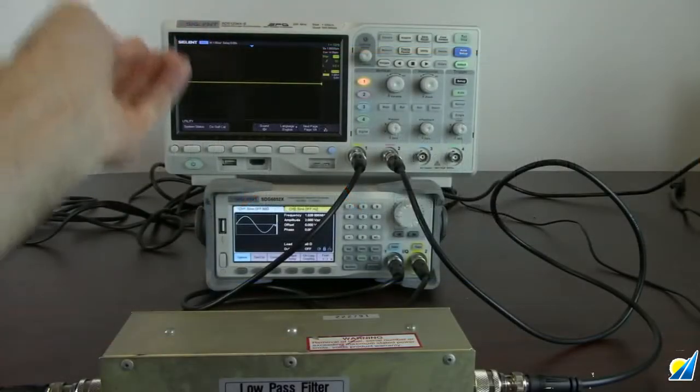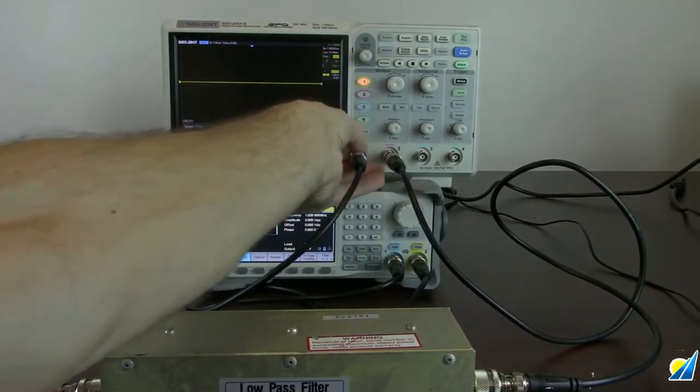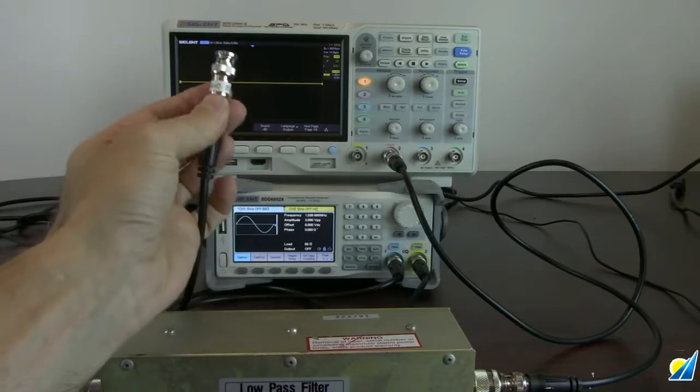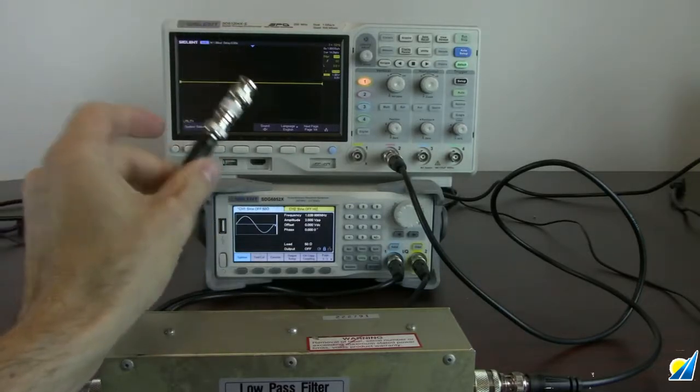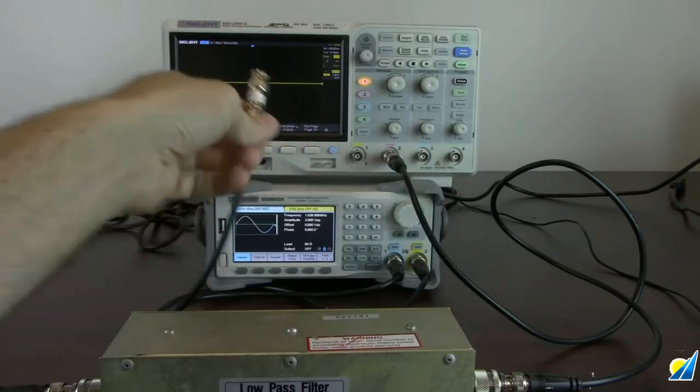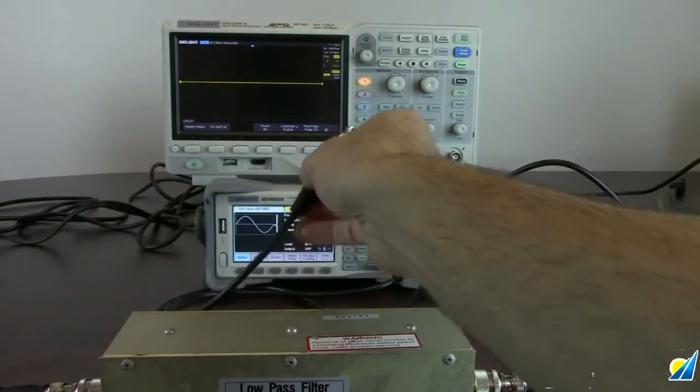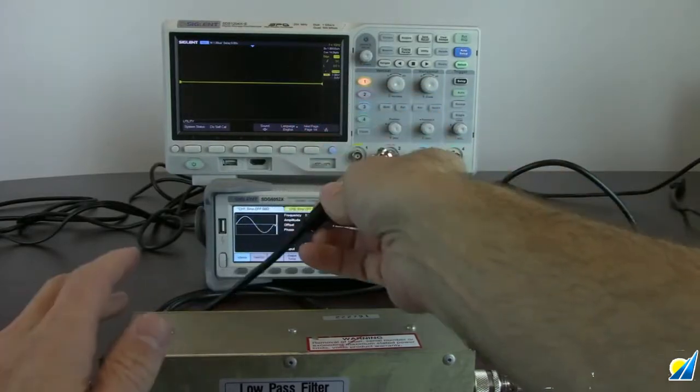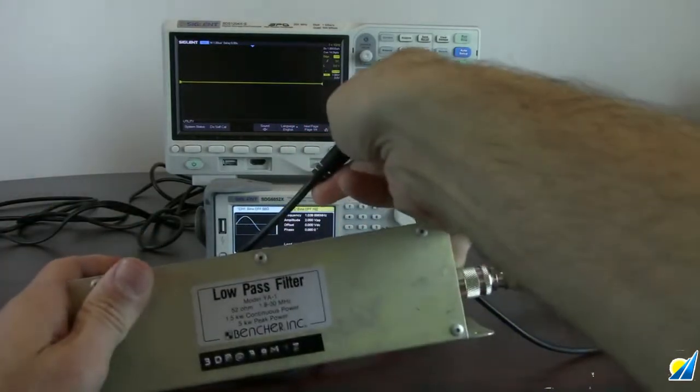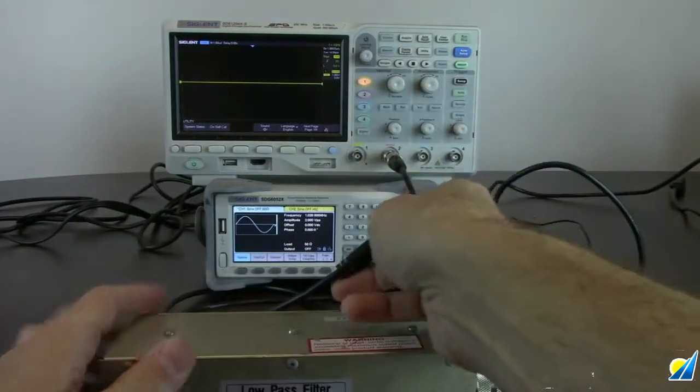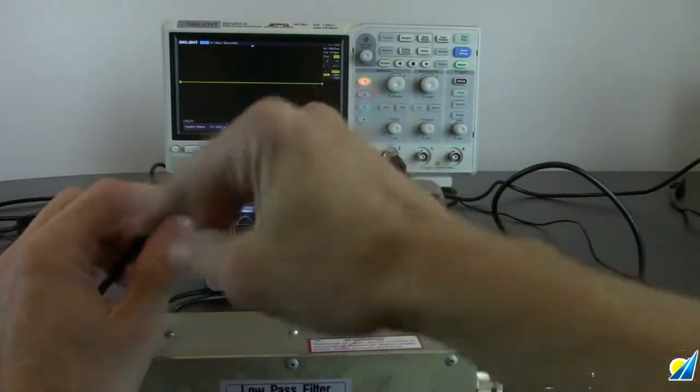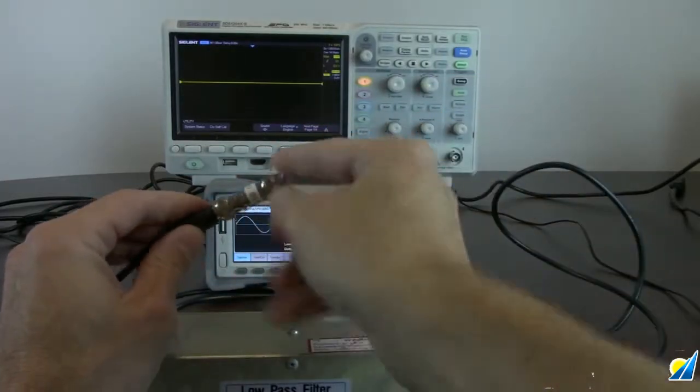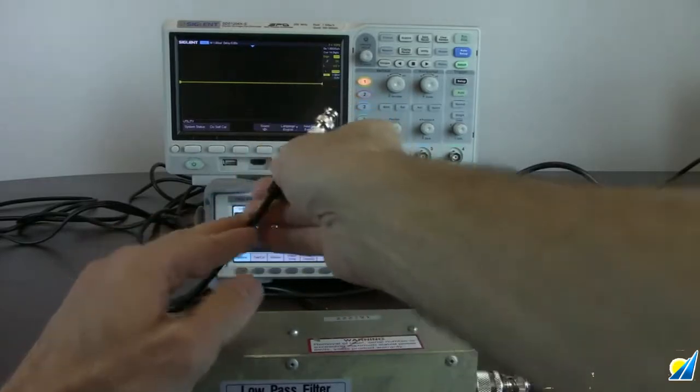Then we're going to connect two 50 ohm terminations. The XE oscilloscopes do not have a 50 ohm input, they only have a 1 mega ohm input. Since everything in our measurement is 50 ohms - the generator as well as the low-pass filter - we want to have impedance matching so we minimize our reflections and that will minimize the effects on the phase. So we're going to use that 50 ohm termination both on channel one and on channel two.